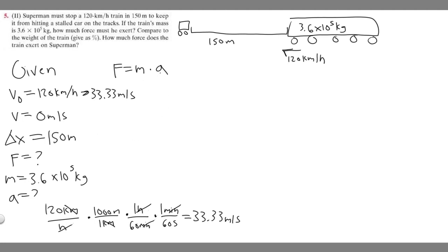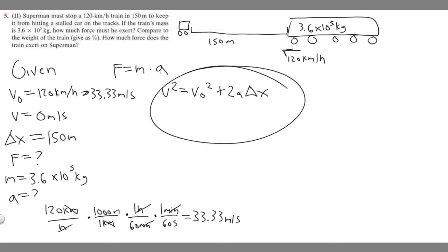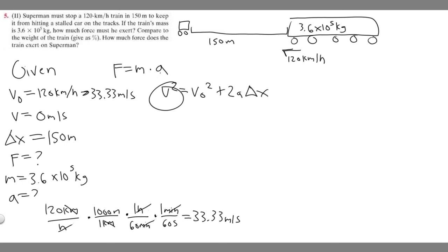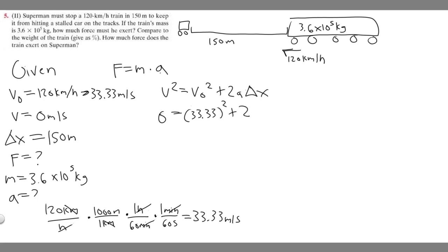Now we have the initial velocity, so we just need to solve for acceleration using one of the kinematic equations. The equation that works best here is v squared equals v sub zero squared plus 2a times delta x. We have v, v sub zero, and delta x — we're solving for a. Plugging in: zero squared equals 33.33 squared plus 2 times a times 150.